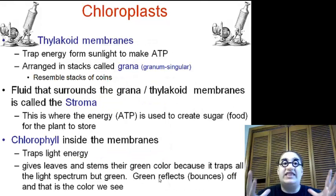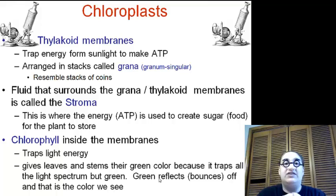So the thylakoid membranes, they are the ones that trap the light energy from the sunlight and make ATP. Again, they are arranged in stacks called granum, or grana, and they resemble coins. Coins, chloroplasts. If you see a jelly bean with coins, then it's going to be chloroplasts. Next, we have the fluid that surrounds the grana, or the thylakoid membrane, known as the stroma. This is where the ATP is used to actually create sugar, or the food for the plant.